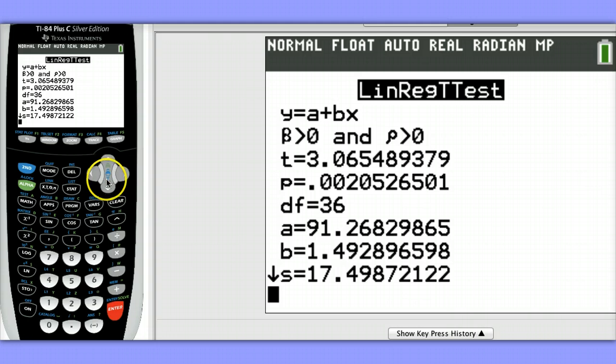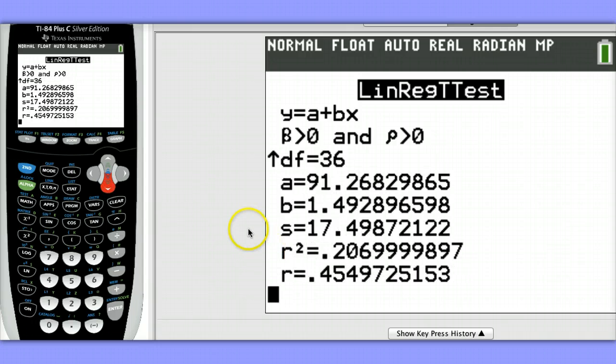Notice we also have our degrees of freedom. We have our y-intercept, our slope. The value of s describes the spread of the residuals about the regression line. We also have our coefficient of determination and our correlation coefficient.